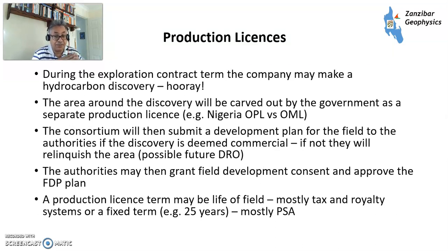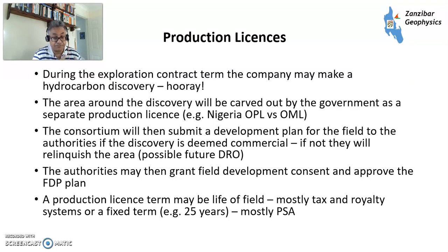Once your exploration licence comes to an end, if you've made a discovery, you can carve out that particular portion as a potential production licence. In Nigeria, for example, there is a distinction between OPL — oil prospecting licences — and OML — oil mining licences. The consortium submits a development plan for the field if deemed commercial. If not commercial, the area is relinquished and could be licensed by the government in future, potentially as a DRO. The authorities may grant field development consent and approve the field development plan, leading to a production licence which may last the life of the field — common in tax and royalty systems such as the UK — or a fixed term, for example 25 years, most common in PSAs.